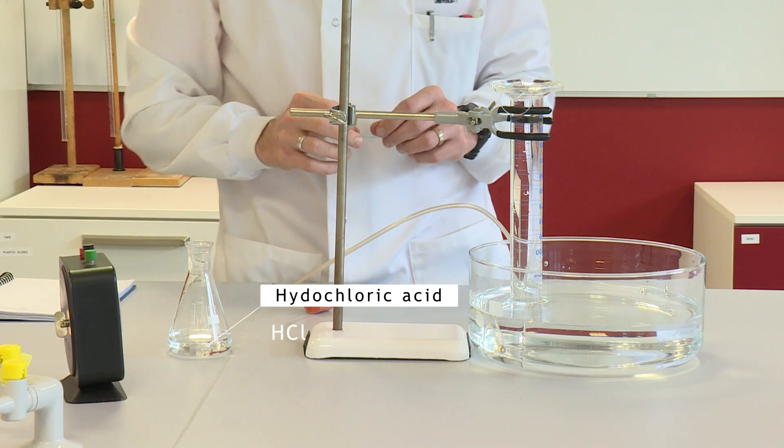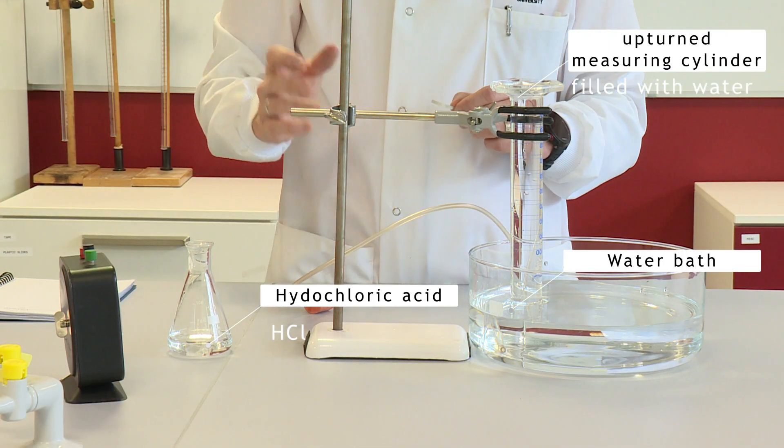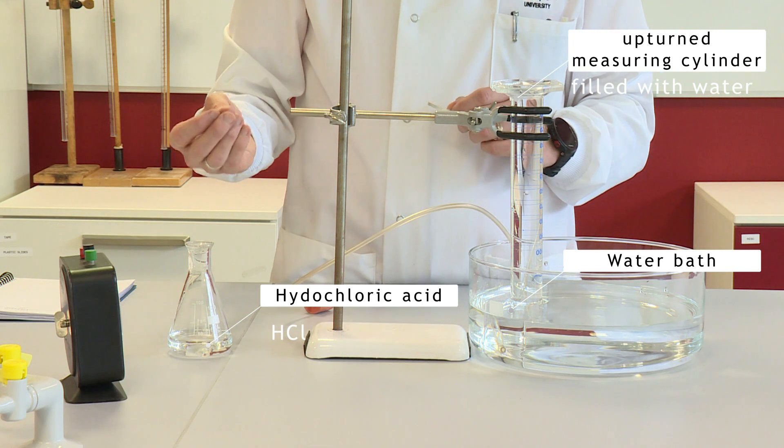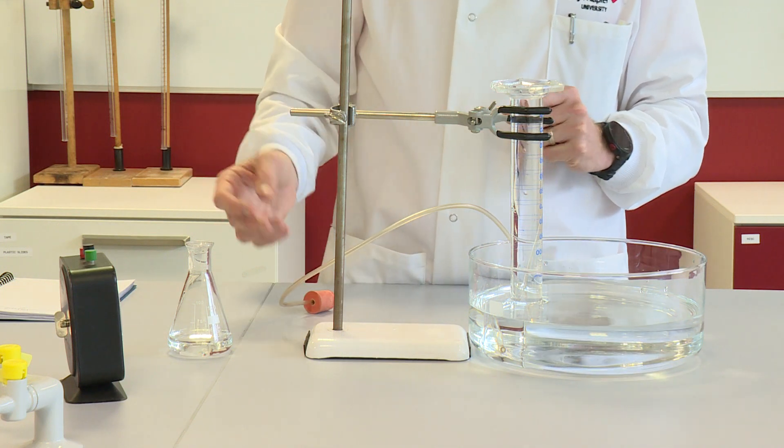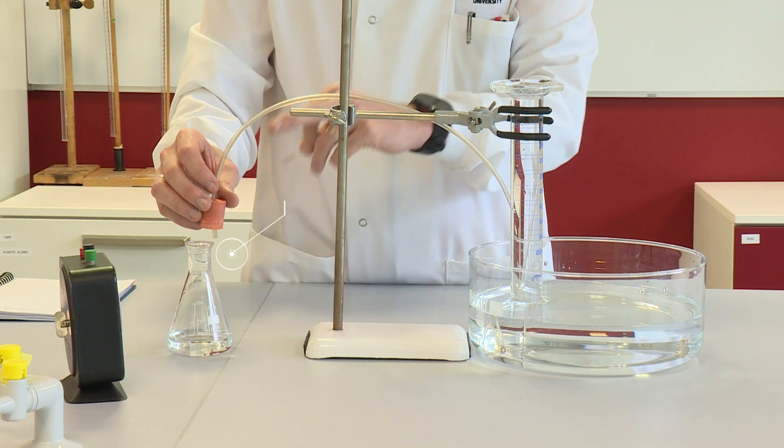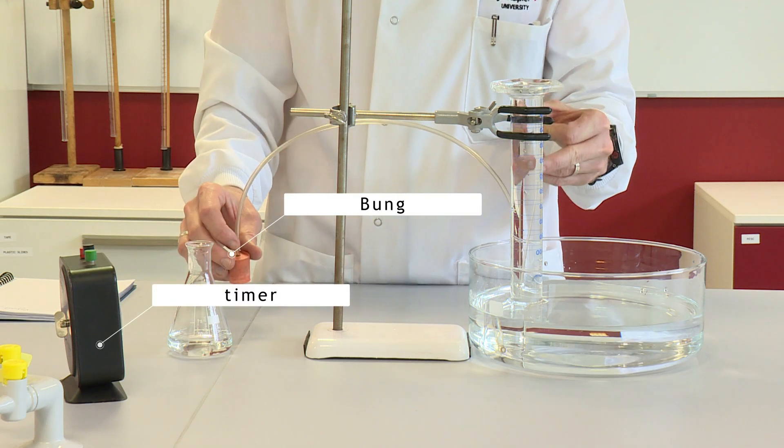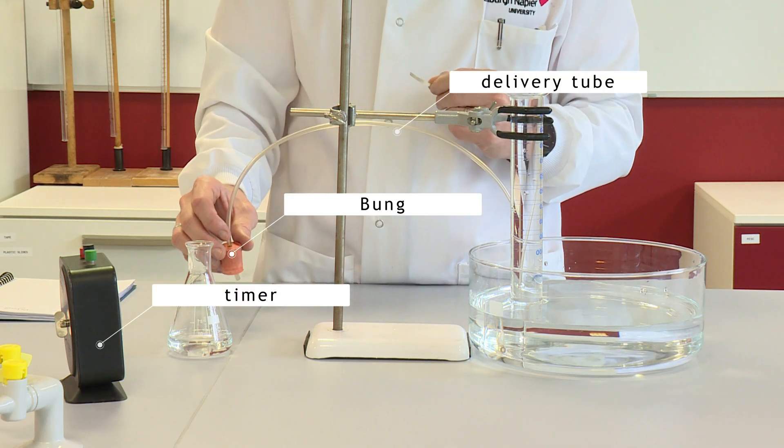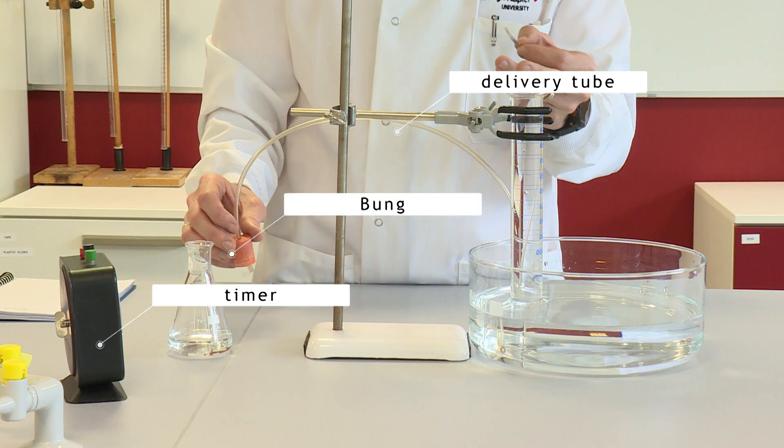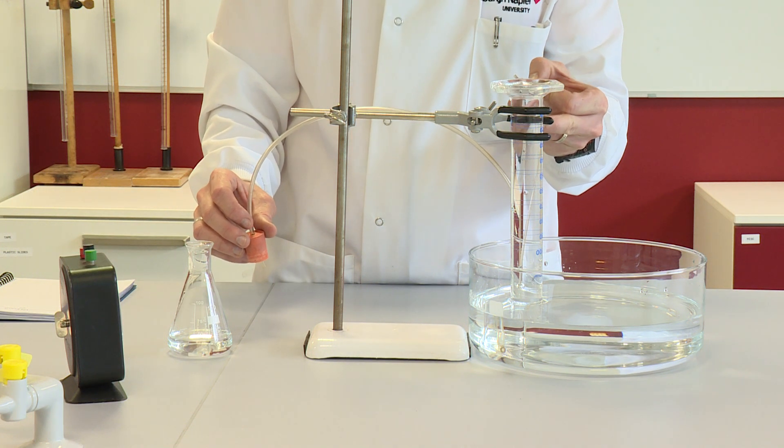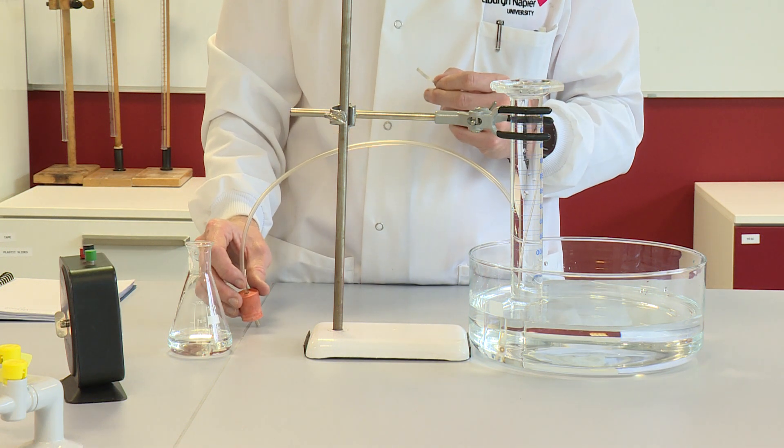We're going to measure the rate of the reaction by measuring the rate of gas formation. The reaction is going to produce hydrogen gas and the hydrogen gas is going to travel down the delivery tube. Here we have an upturned measuring cylinder full with water. It's going to displace the water and I can measure the volume of gas formed.